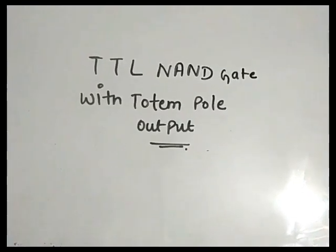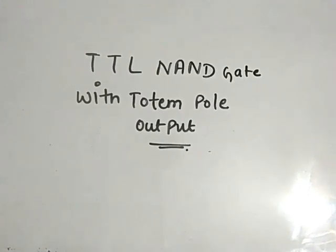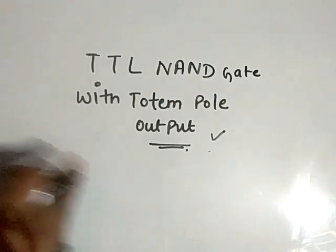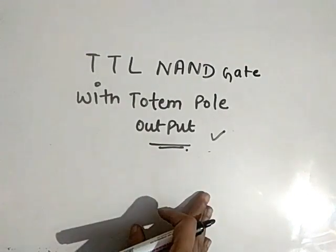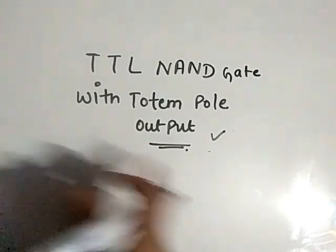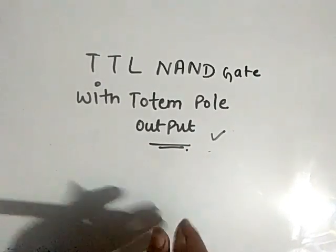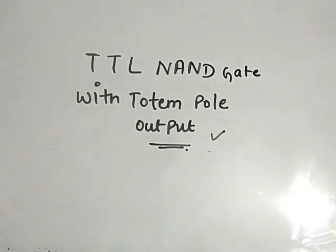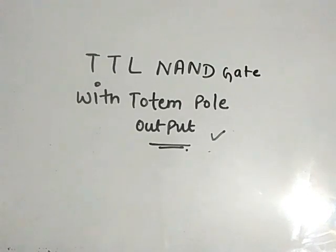In this video, I have explained the TTL NAND gate with totem pole output properly, with circuitry. When we give input high, the output is low, and when we give input low, the output is high. If you like my video, please subscribe, and if you have any doubts, you can ask me in the comment box. Thank you very much.